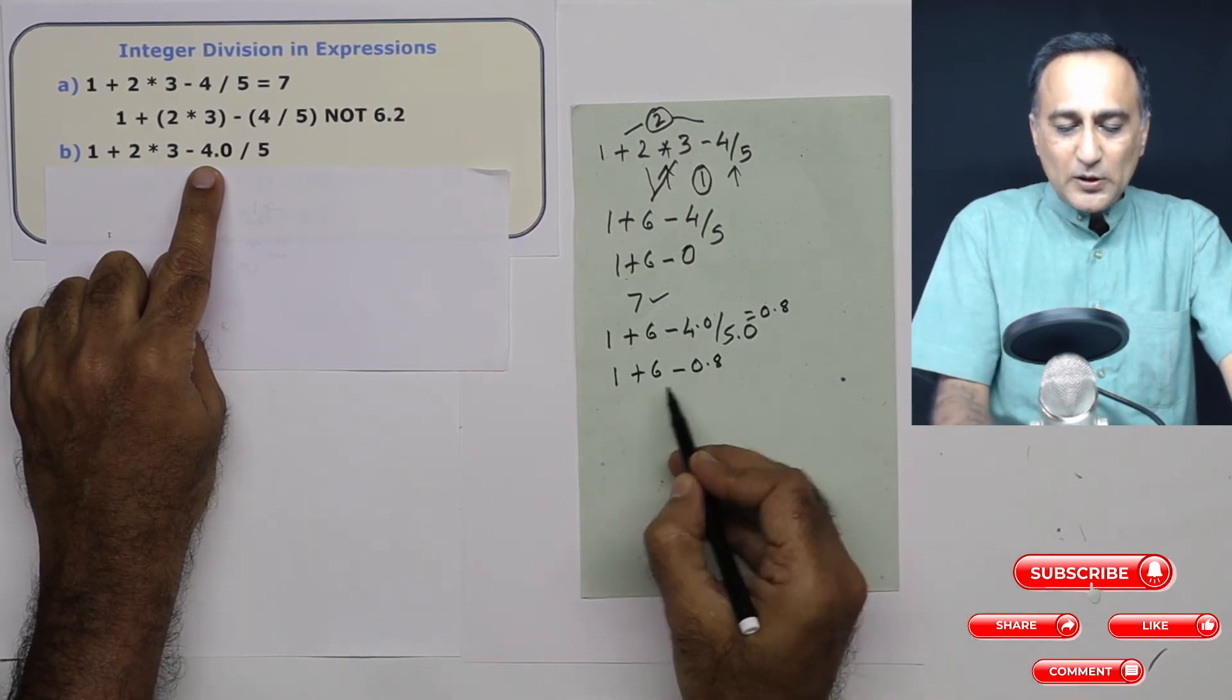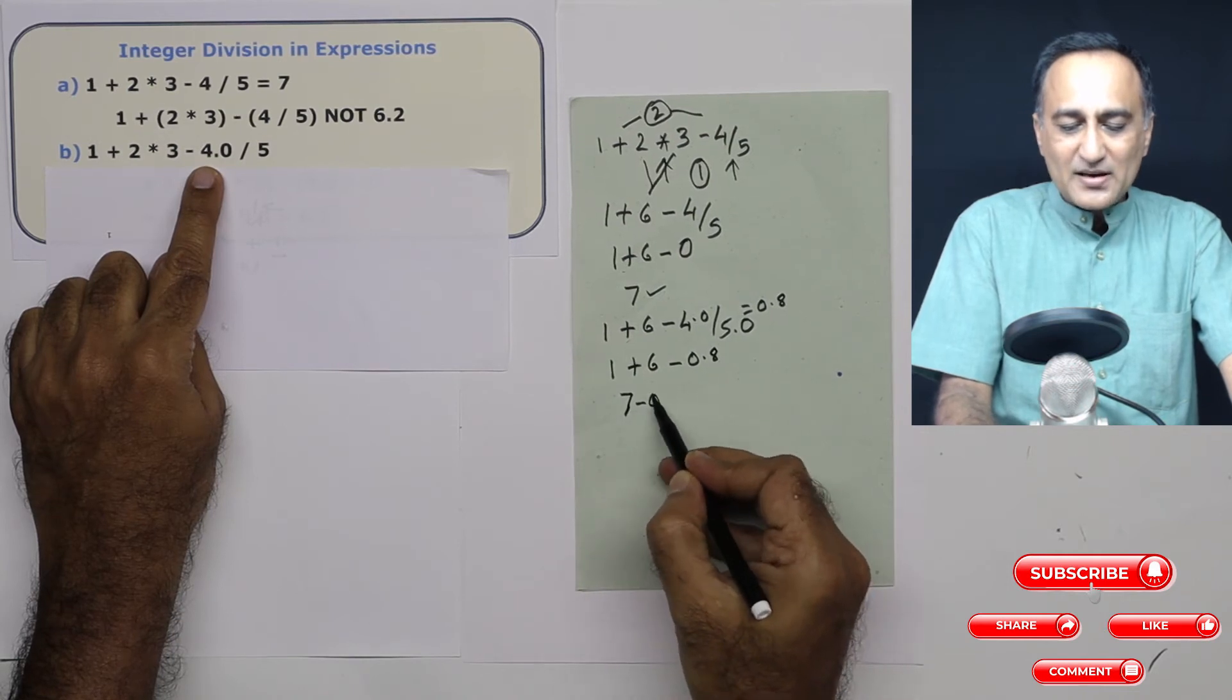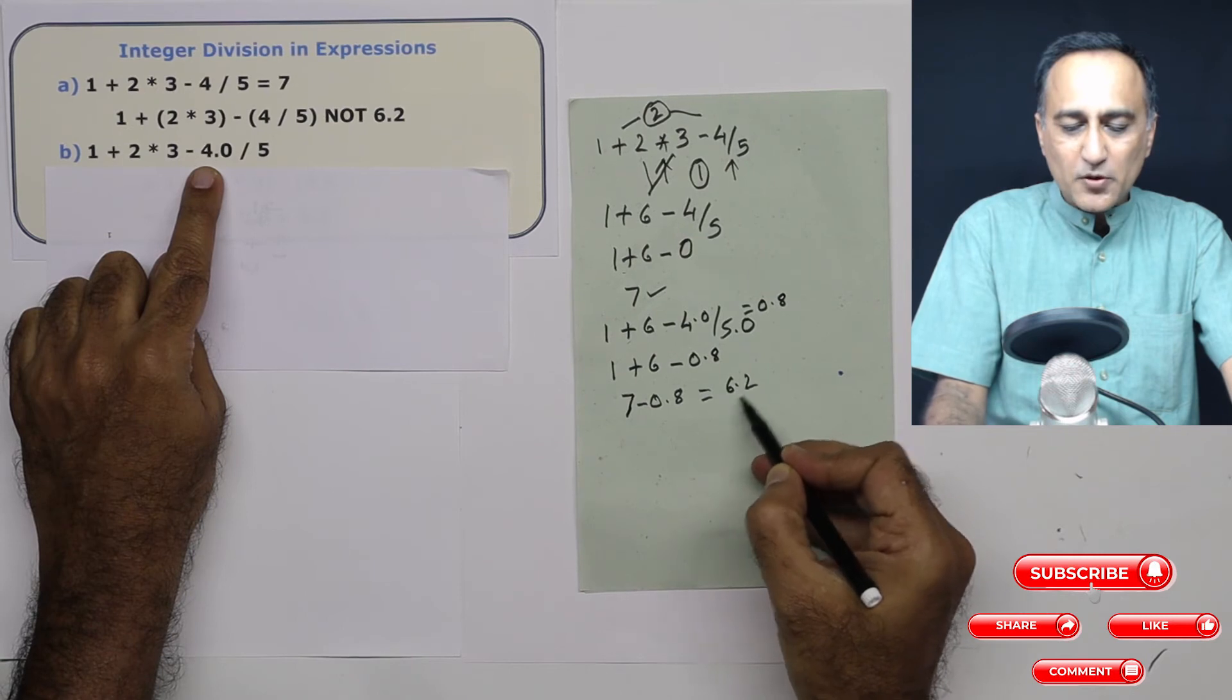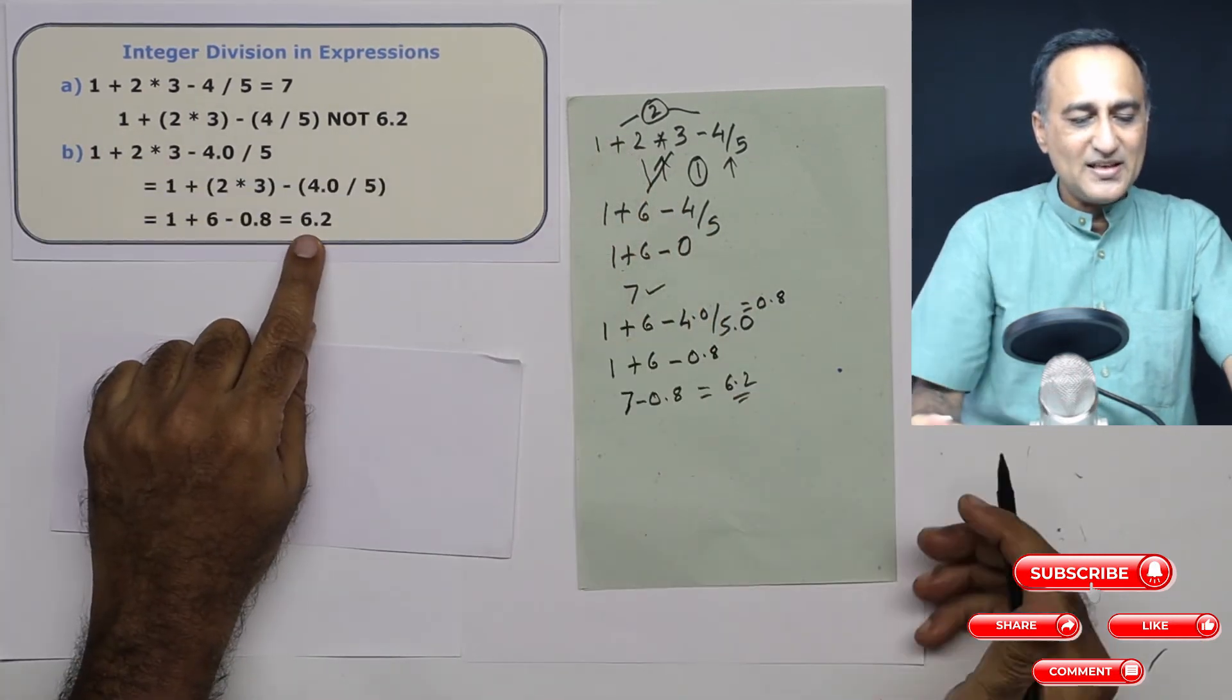Now it is going to look 1 plus 6 minus 0.8. Now both are equal, but again we go from left to right. This happens to be 7 minus 0.8, which is equal to 6.2. So let's check if that is the result. So that is the result.